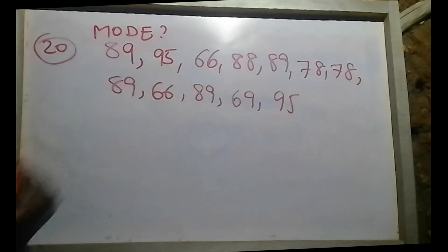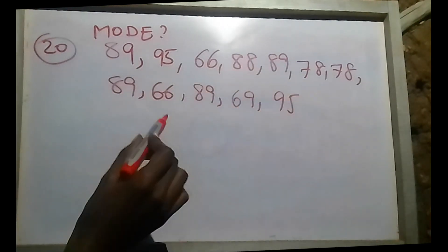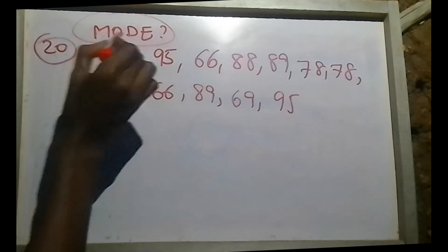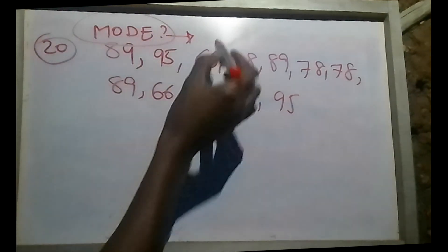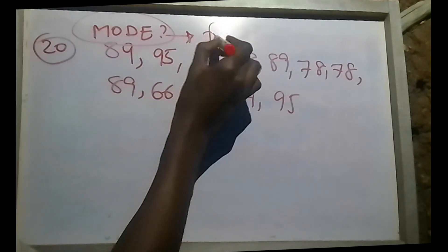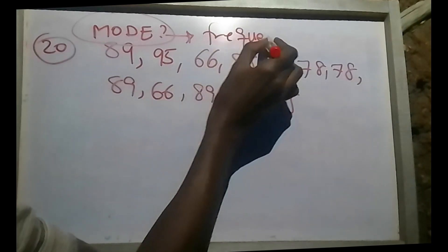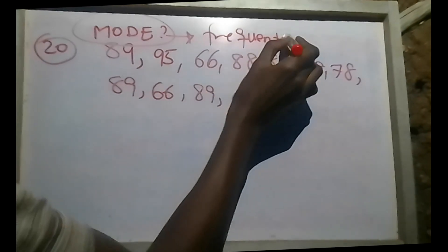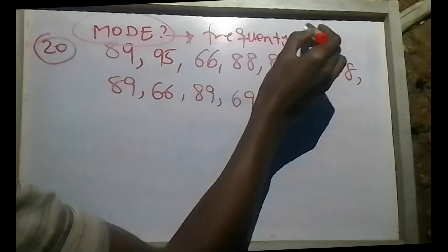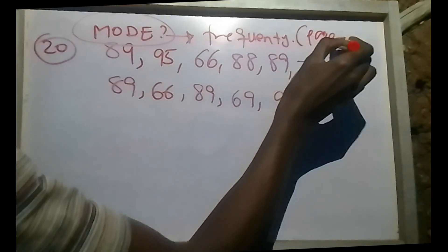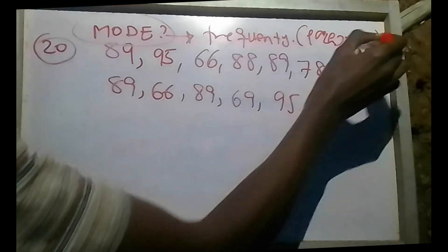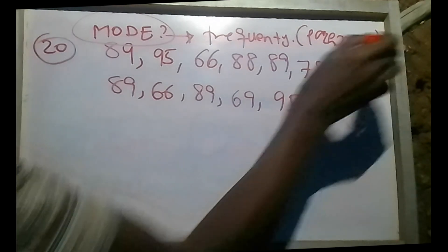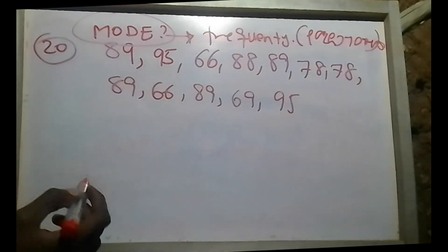This is what we call it — we call it mode. Mode means frequently happening. We call it frequently occurring.